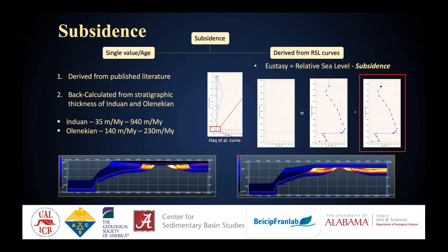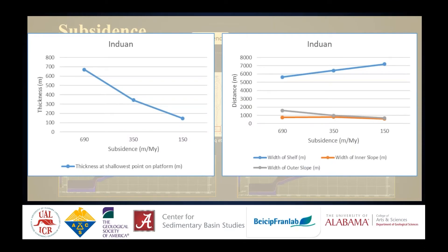Subsidence has been modeled in two ways: first, as single values for age, either measured from the field or taken from literature studies, tested over a wide range of values; and second, as subsidence curves built from relative sea level curves. The general observation is that models built using subsidence curves are a lot more realistic than those built using single values for age. Subsidence impacts the thickness of the formation on top of the platform and the width of the shelf, but not so much the slope.